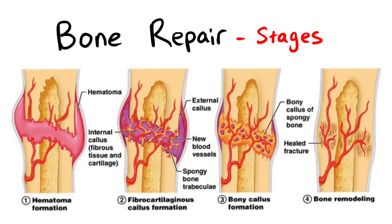In terms of bone repair, when a bone is fractured or injured, the body initiates a repair process. The first stage is the formation of a hematoma, like a blood clot, at the site of the fracture, providing temporary stabilisation. Next, immune cells and osteoclasts remove the damaged tissue, and new blood vessels are formed to deliver oxygen and nutrients to the area.